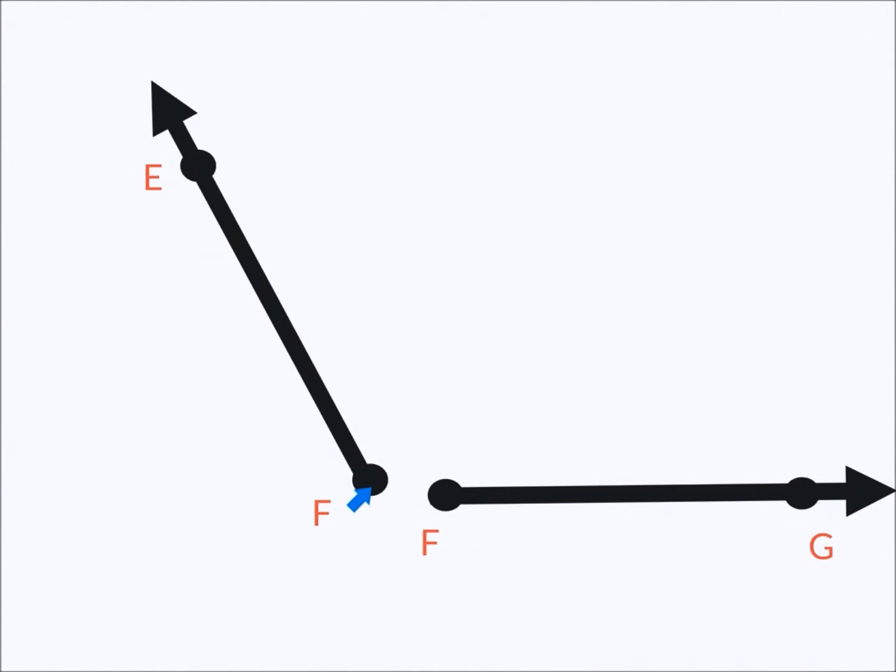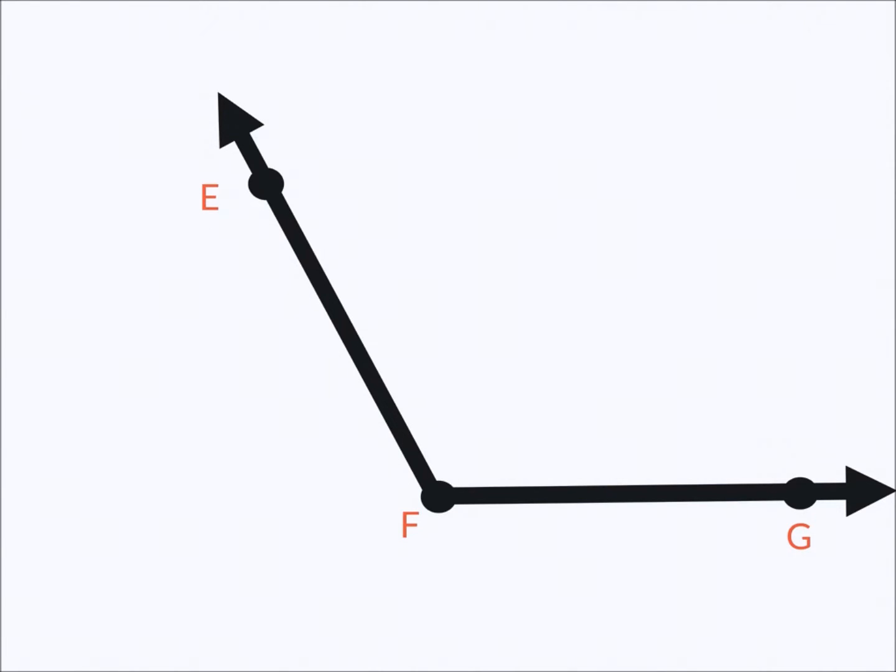Here we have two more rays. We have ray FE and we have ray FG. We will name these ray FE, going in the direction of E, and ray FG. If we put these two rays together we get an angle. We can name this angle EFG with the F which is the vertex in the middle, or angle GFE. Or if we had a number here like 3 we could also call it angle 3. And finally we can name this angle F.